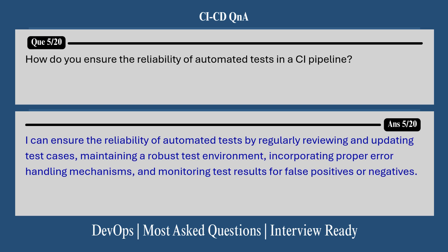The next question is about reliability. How would you ensure the reliability of automated tests in a CI pipeline? I ensure reliability of automated tests by regularly reviewing and updating test cases, maintaining a robust test environment, incorporating proper error handling mechanisms, and monitoring test results for false positives and negatives.